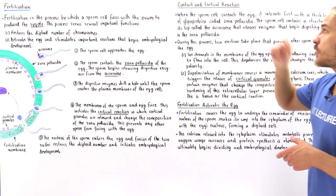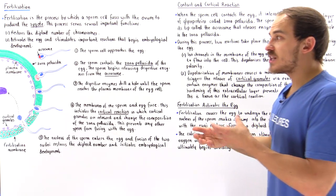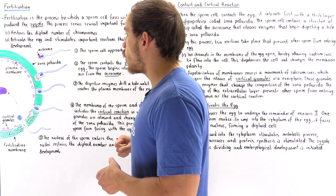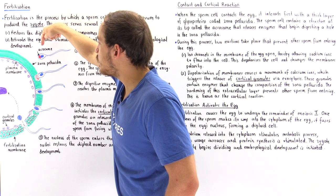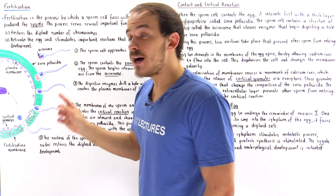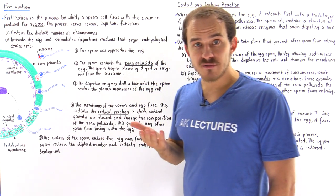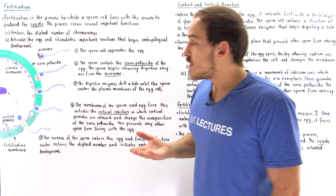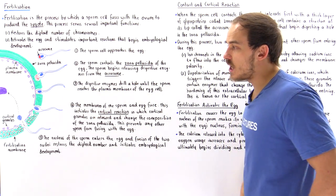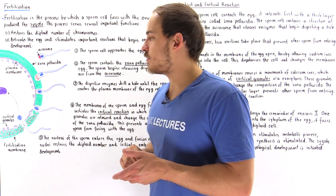The first contact between the sperm cell and the egg cell takes place at the zona pellucida. When the sperm cell contacts the egg, it interacts first with this layer of glycoproteins. The acrosome on the tip of the sperm cell releases digestive enzymes that begin digesting a hole in the zona pellucida, and when this happens, two important processes take place.